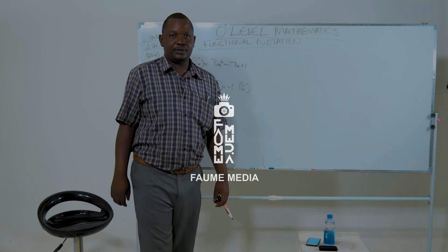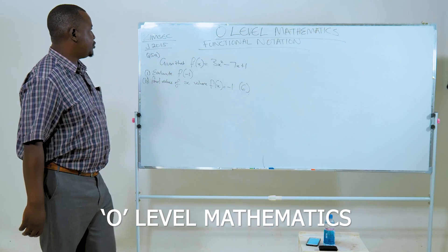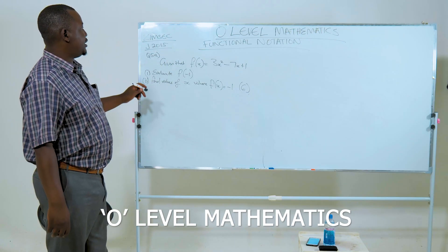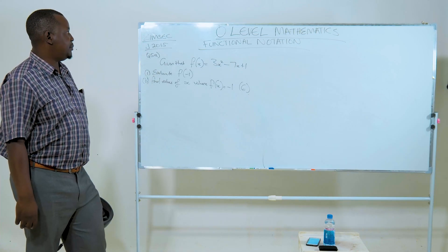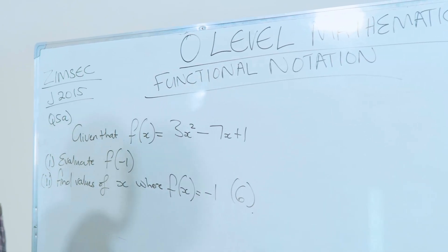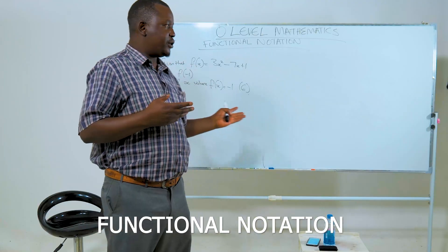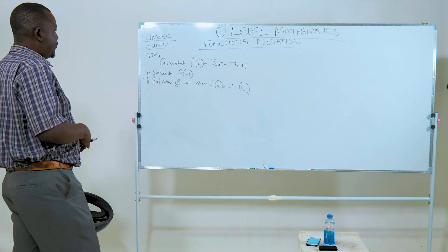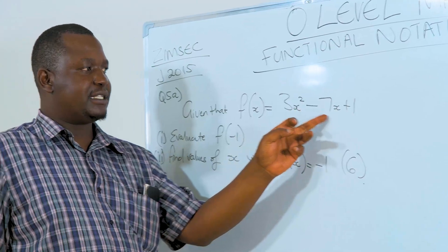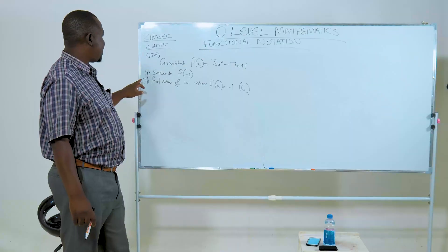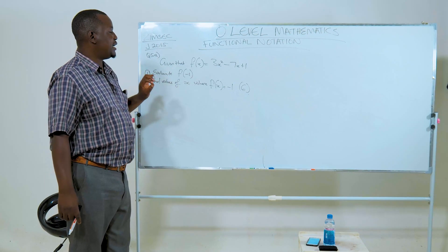Salutations ladies and gentlemen, this is your host Chico Squared. In this video I am going to be looking at a question from the Zimbabwe Schools Examinations Council June 2015 question paper in A-level mathematics under the topic of functional notation. On the board we are given that f(x) is equal to 3x squared minus 7x plus 1, and we are required by item 1 of the question to evaluate f(-1).